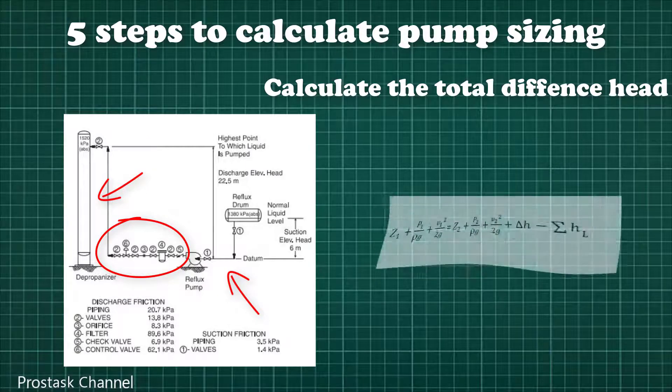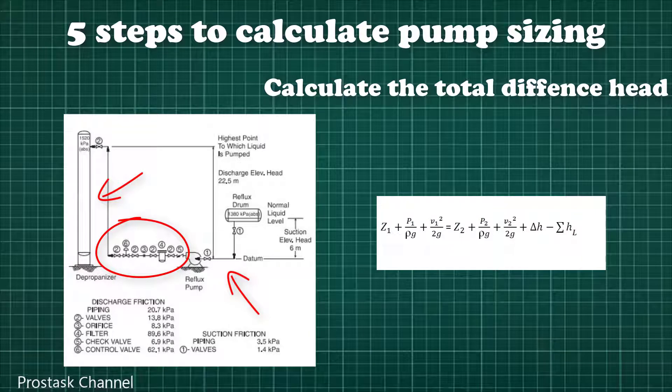Bernoulli's equation is the equation developed from basic steady-state energy balance equation that is basically used to calculate the total developed head of incompressible fluid. The formula is shown as picture. Where Z is elevation, P is pressure, ρ is density, V is velocity, H is head and g is acceleration of gravity.